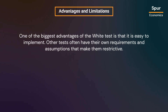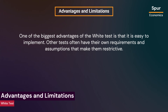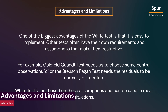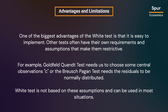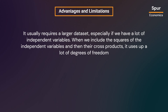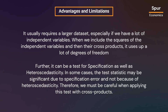One of the biggest advantages of the White test is that it is easy to implement. Other tests have restrictive requirements — for example, the Goldfeld-Quandt test requires choosing central observations, and the Breusch-Pagan test requires normally distributed residuals. However, the White test has limitations: it requires a larger dataset when there are many independent variables, since including squares and cross products uses up many degrees of freedom. Additionally, the test statistic can be significant due to specification error rather than heteroscedasticity, so care is needed when including cross products.